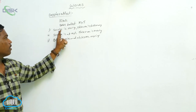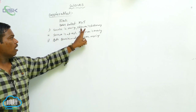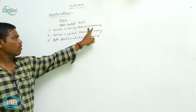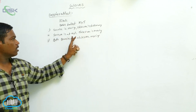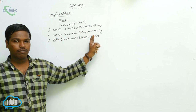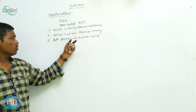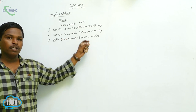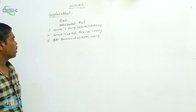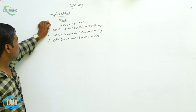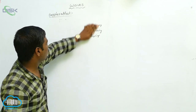To understand the Doppler effect, there are three situations: the source is moving and the observer is stationary, the source is at rest and the observer is moving, and both the source and observer are moving. These are the three situations we have to understand for the Doppler effect.